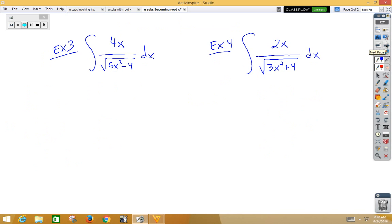Let's do another example. Here, in example 3, my u is 5x squared minus 4 because that's my inside function. My du would then be 10x dx.